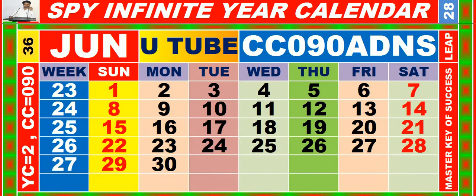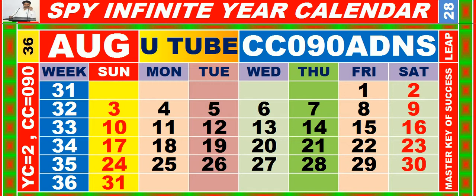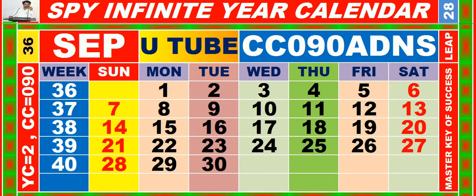Calendar for the month of June having calendar code equal to 090. Calendar for the month of July having calendar code equal to 090. Calendar for the month of August having calendar code equal to 090. Calendar for the month of September having calendar code equal to 090.